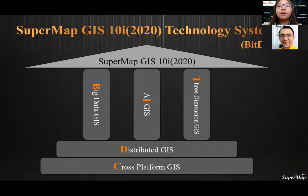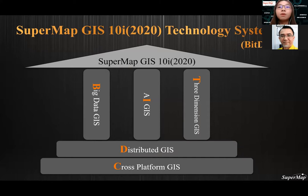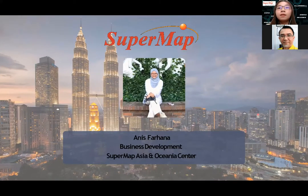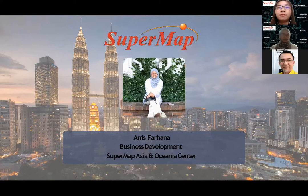Now that you already know about the five key technologies of SuperMap GIS, which we call BitDC — standing for Big Data GIS, Artificial Intelligence GIS, 3-Dimensional GIS, Distributed GIS, and Cross-Platform GIS — based on our topic for today's webinar, let's look deeper at our 3D GIS technology with Ms. Anis Farhana, our Business Development employee of SuperMap Asia and Oceania Center.